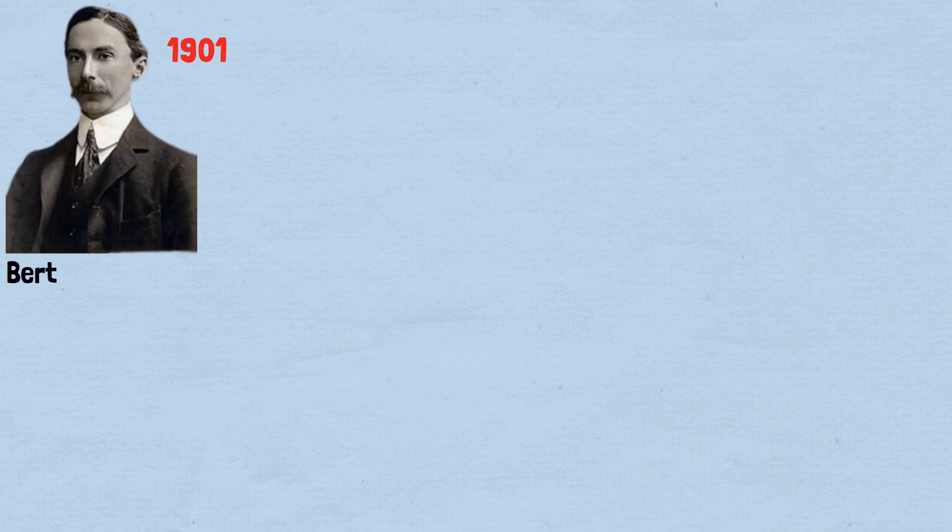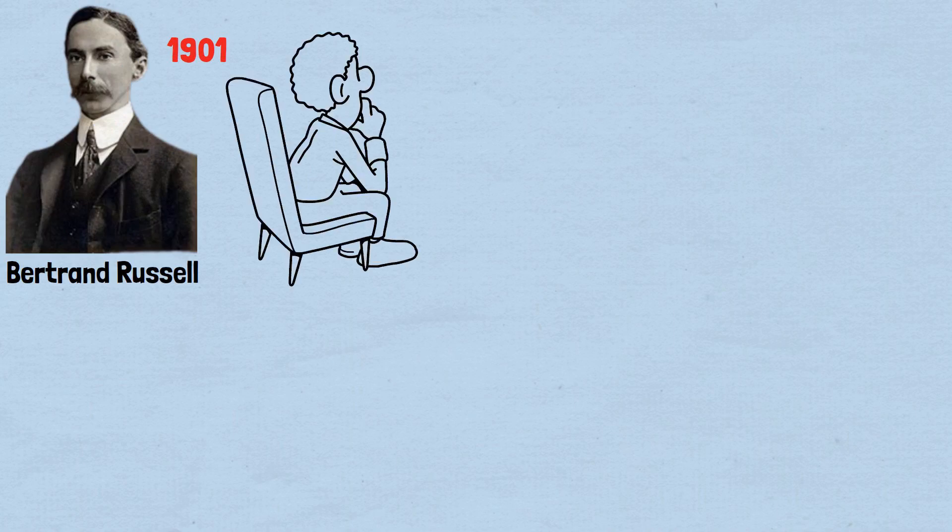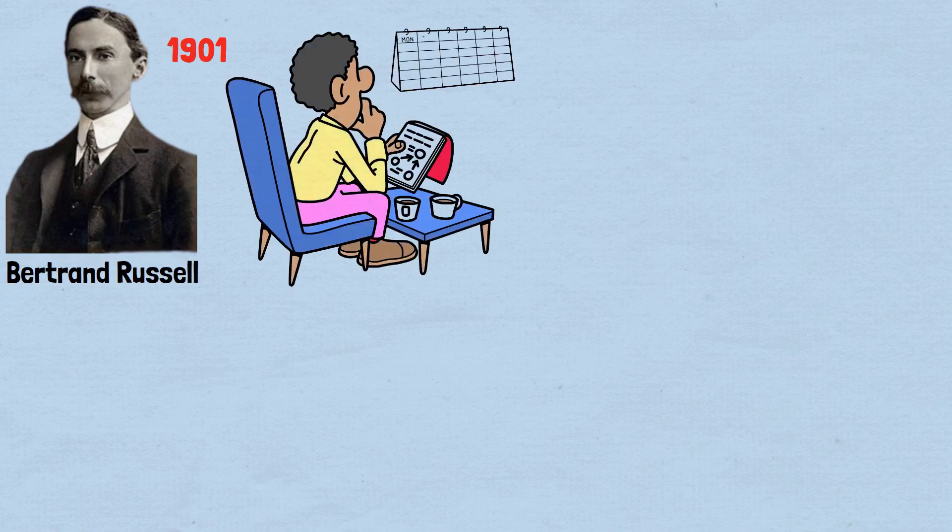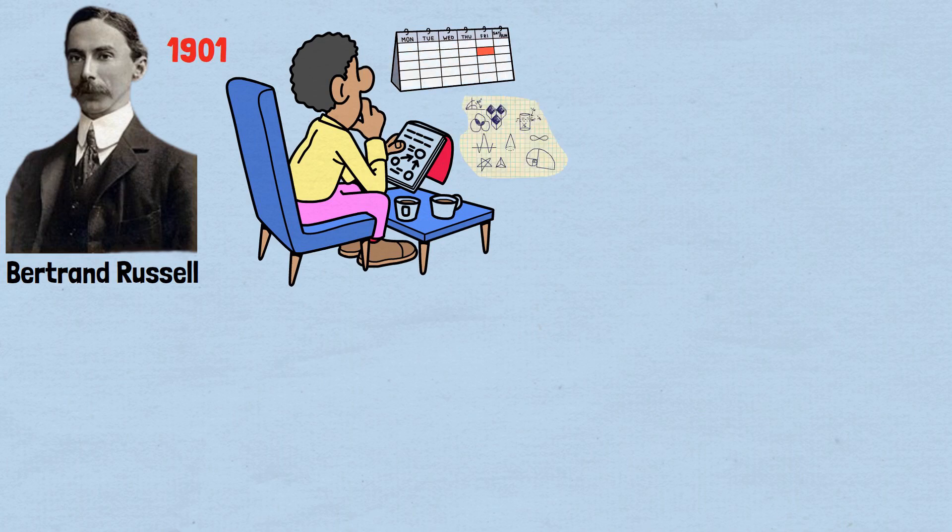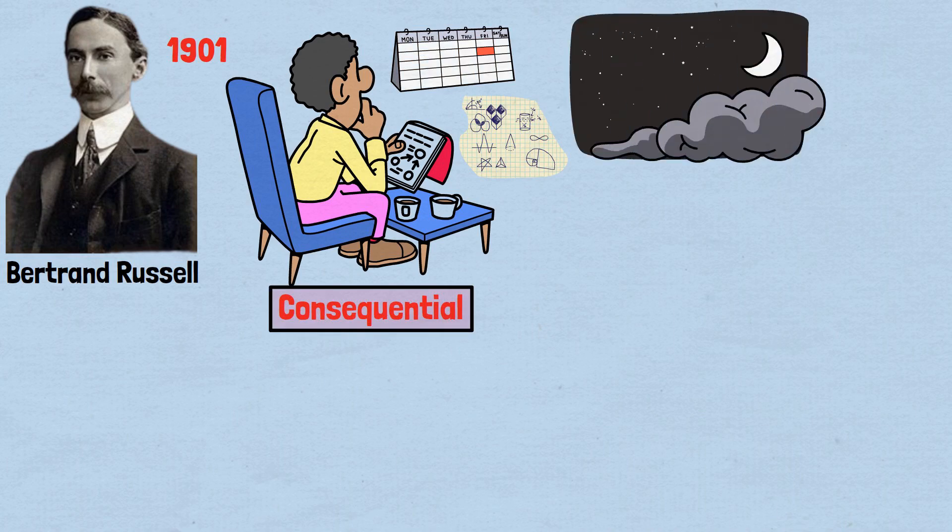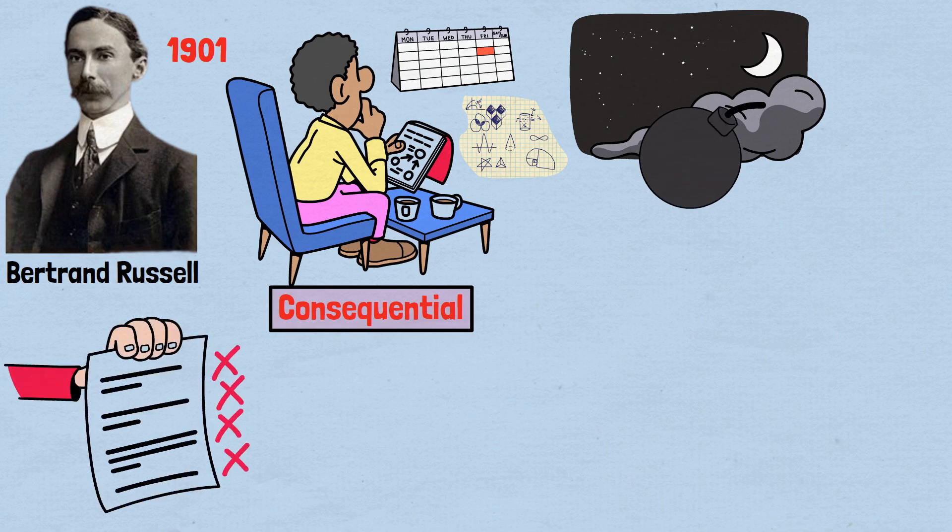In 1901, a young philosopher and mathematician named Bertrand Russell sits at his desk deep in thought. What begins as a routine exploration of mathematical foundations is about to become something far more consequential. By dawn, Russell will uncover a logical time bomb, a paradox so fundamental that it threatens to collapse the very foundations of mathematics and all of science.